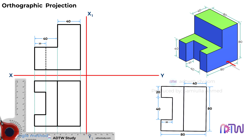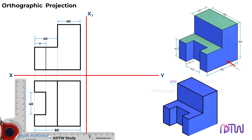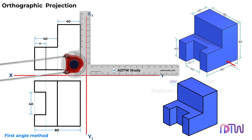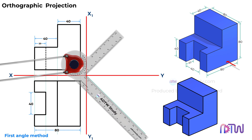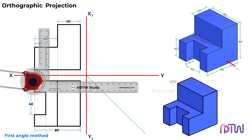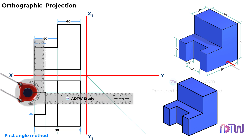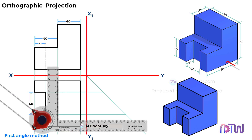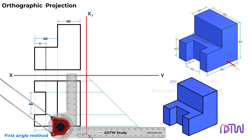This completes the top view of the given figure. Next we will draw the side view. To do so, we will first draw a line inclined at 45 degrees from the origin as shown — this line will help us in projecting lines from the top view. Now project the horizontal lines from the top view up to this inclined line, and then project the horizontal lines from the front view as shown.